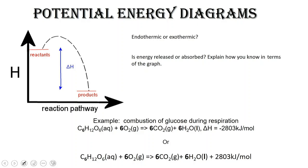If you remember from our previous video, in endothermic reactions, energy has to go into the system and we have a positive delta H. Whereas for exothermic reactions, we have a negative delta H and energy is released. Let's determine whether energy is either released or absorbed in this reaction to help us determine if this is an endothermic or exothermic reaction.